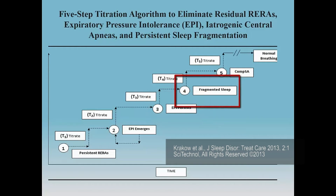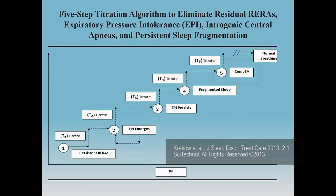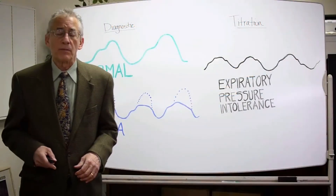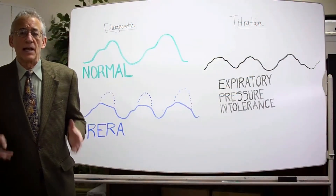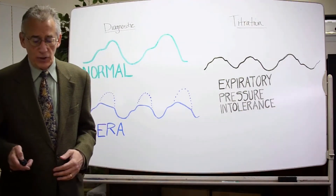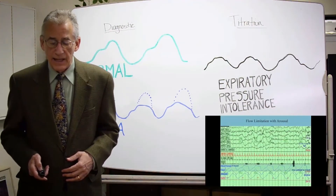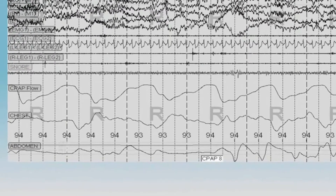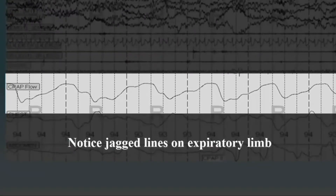Eventually, central apneas and complex sleep apnea may develop, and then you must institute a different form of PAP therapy such as ABPAP or ASV to overcome that. Regardless of whether the patient develops central apneas, it's very common for these individuals to develop expiratory pressure intolerance. Flow limitations lead to expiratory pressure intolerance when treatment is not going well with PAP therapy.